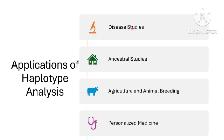Haplotype analysis is also crucial for studying population genetics and evolutionary biology. By comparing haplotypes across different populations, researchers can trace the historical movement and mixing of human populations. The diversity of haplotypes within a population can provide insight into its genetic history, the impact of migration, and the forces of natural selection. Furthermore, by examining haplotype patterns across different species, one can infer the evolutionary relationships between species.